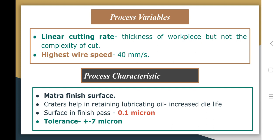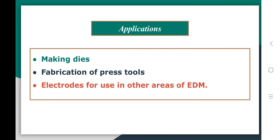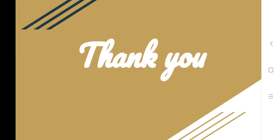A surface finish on the order of 0.1 micron can be achieved in a finishing pass, and accuracy of the magnitude of plus or minus 7 microns or lower in some cases can be achieved. Uniformity of wire diameter, temperature, as well as residue of the dielectric should be closely controlled. With today's systems, machining rate for certain materials can go up to about 40 centimeter squared per hour. Wire EDM has been employed for making dies of various types; the process is also used for fabrication of press tools and jig tools.